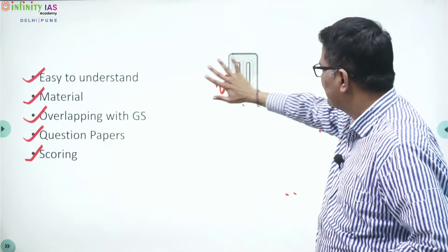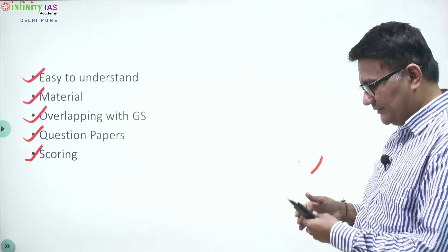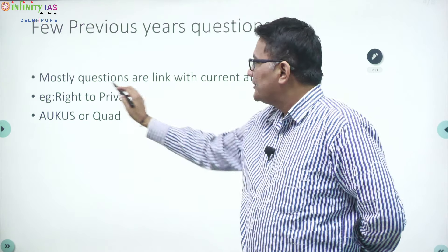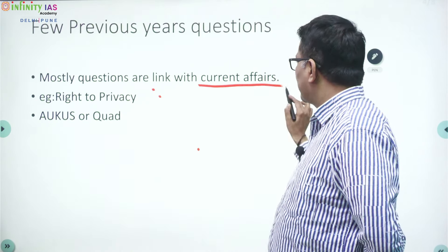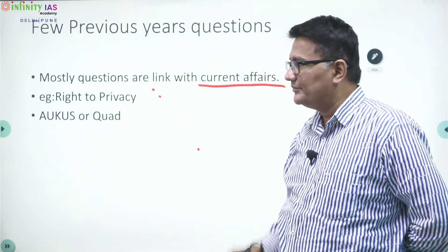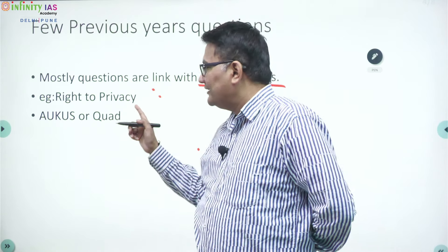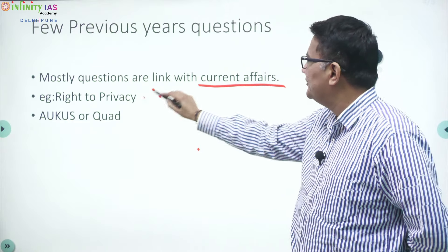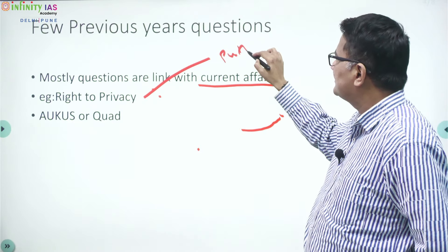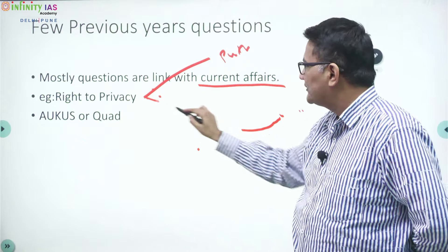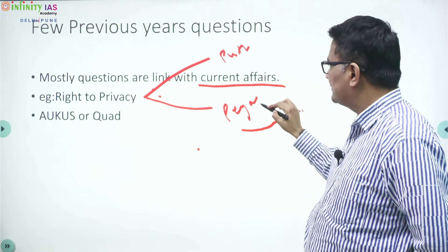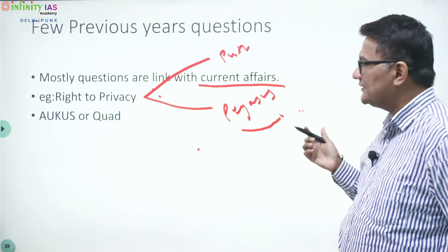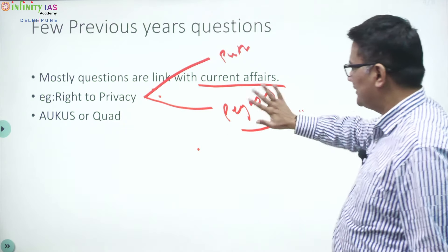What type of questions may they ask in political science? Mostly questions are linked with current affairs only. For example, right to privacy — they have recently asked this. Right to privacy was in the news in the Puttaswamy case, and also in the Pegasus case. Since right to privacy was in the news, that is the reason they asked this question.